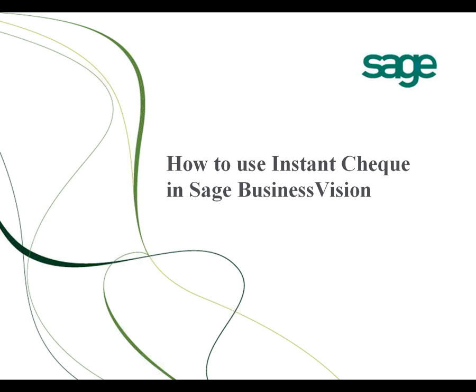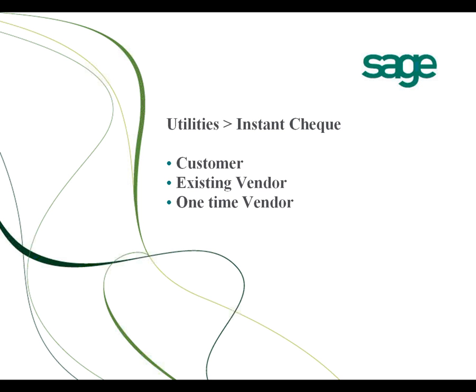This video will show you how to use the Instant Check function in Sage Business Vision. To access the Instant Check, you go to Utilities, then select Instant Check.